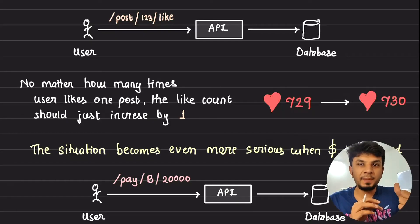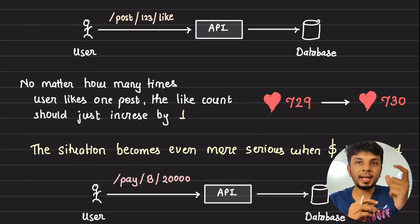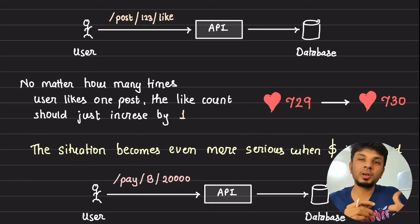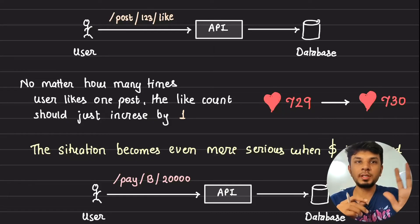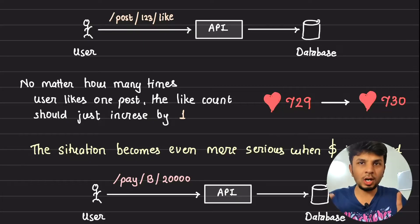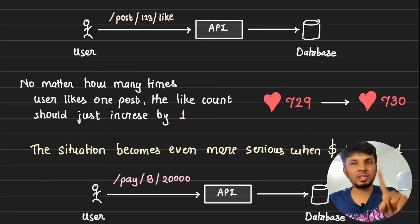No matter if that API is called one time, 100 times, or 1000 times, the resultant outcome is always going to be the count overall increasing by just one.